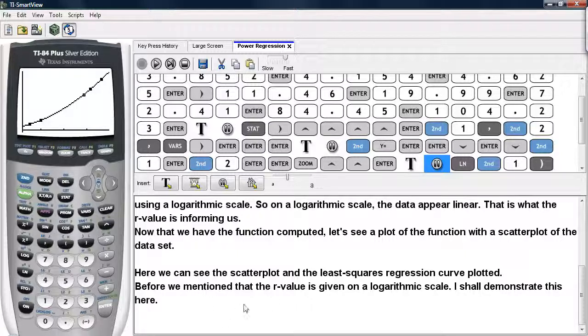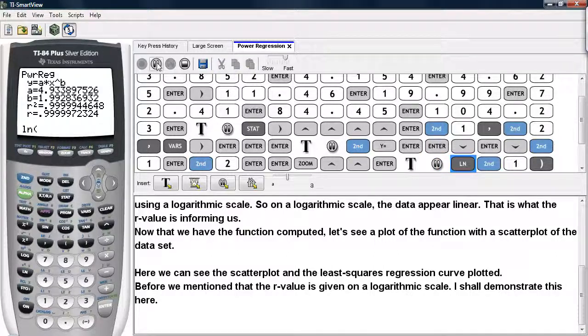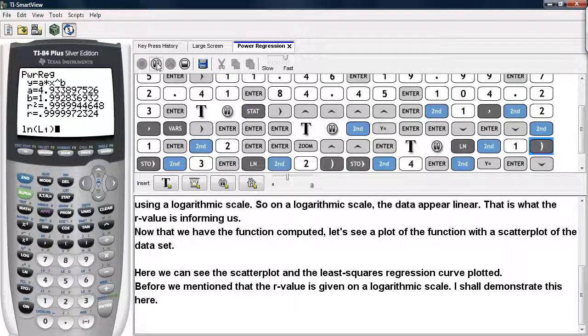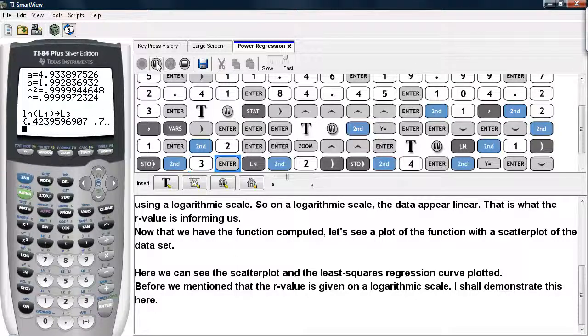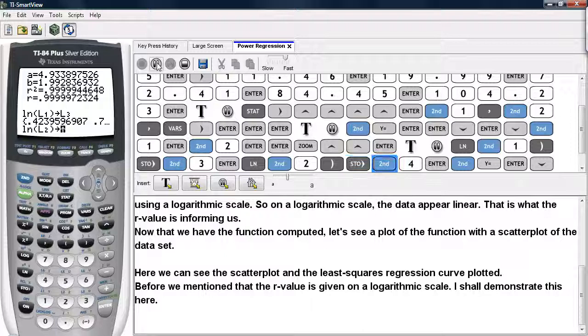Now before we mentioned that the R value is given on a logarithmic scale and I will demonstrate what this means here as well. If we go ahead and hit the natural log of the first list and store that in list 3, we have rescaled the input values to be on a logarithmic scale. If we do the same thing for L2, take the natural log of L2 and store that as L4, we have rescaled the Y values onto a logarithmic scale also.